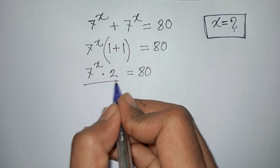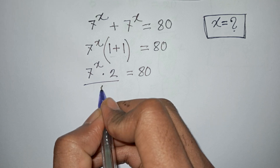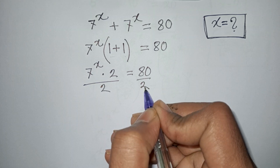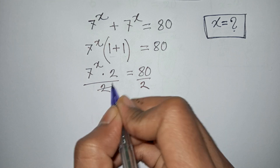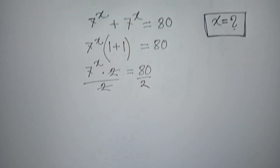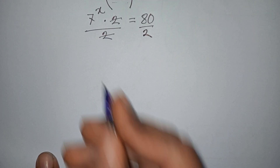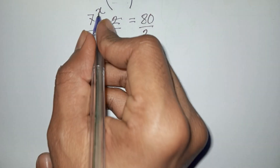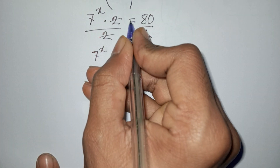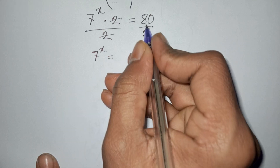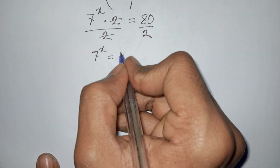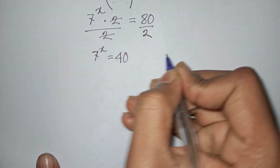Now divide by 2 on both sides. This 2 and this 2 will be cancelled. So, 7 power x is equal to 80 divided by 2, that means it will be 40.